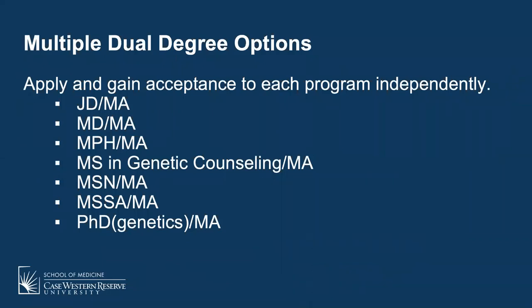We have multiple dual degrees: JD/MA, MD/MA, MPH/MA, Master's in Genetic Counseling/MA, Nursing/MA, Master's in Social Science Administration/MA (our social work equivalent), and on the books a PhD in genetics/MA. To pursue a dual degree, you apply to each program separately, gain acceptance in each separately, indicate your interest in the dual degree to each program as you apply, and a decision is made after you're admitted to both.